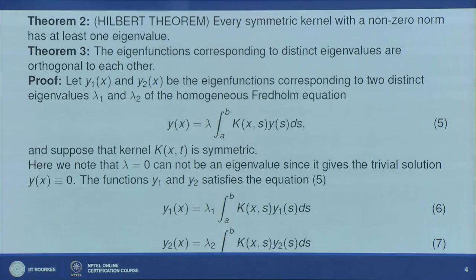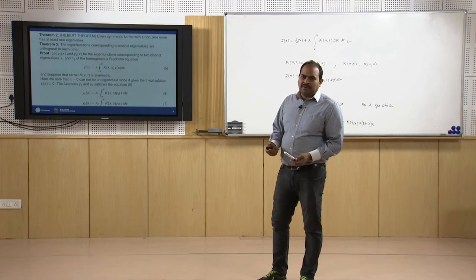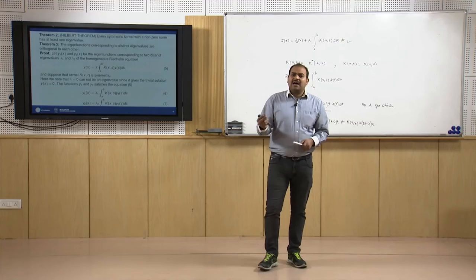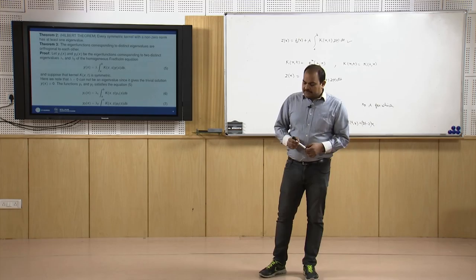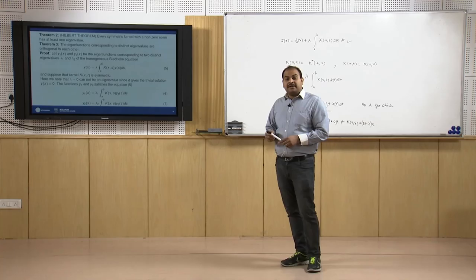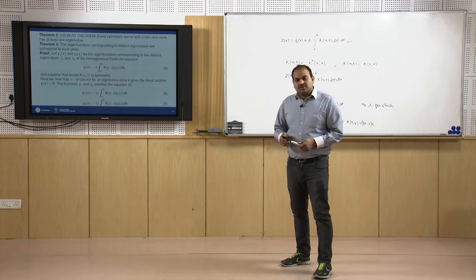We may have more than one eigenvalue, or finitely many, or infinitely many eigenvalues. For a separable kernel we can have only finitely many eigenvalues. But if the kernel is not separable, it may happen that we have an infinite number of eigenvalues and a corresponding infinite number of eigenfunctions.